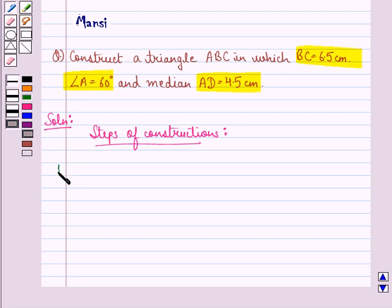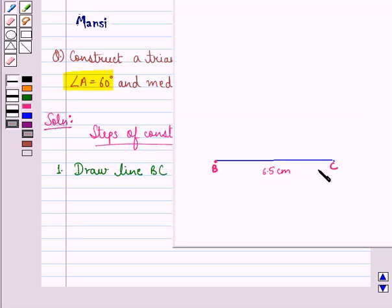Step 1 is, draw a line BC of 6.5 cm. So let this be the line BC of 6.5 cm.